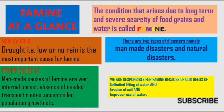Unlimited lifting of water, erosion of soil, and improper use of water all contribute. No doubt, drought — that is, low or no rainfall — can be the main cause of famine. Other causes include manmade activities like absence of needed transport routes, uncontrolled population growth, internal unrest, and war, which also lead to famine conditions.